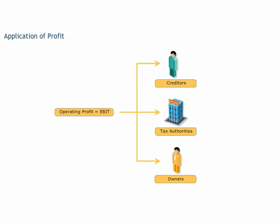The operating profit earned is the profit available for distribution between the creditors, tax authorities, and owners of your organization. The distribution of profits is based on the assumption that all assets contribute to generate profits for an organization. Therefore, the profits should be distributed amongst those who provided the assets.